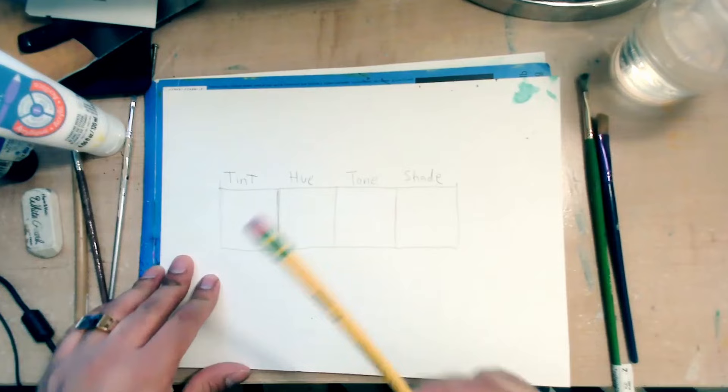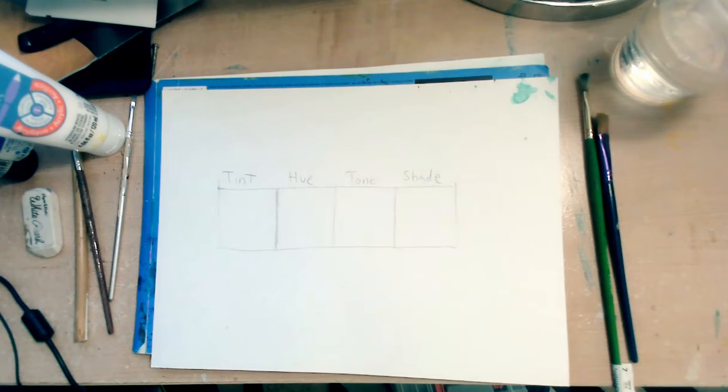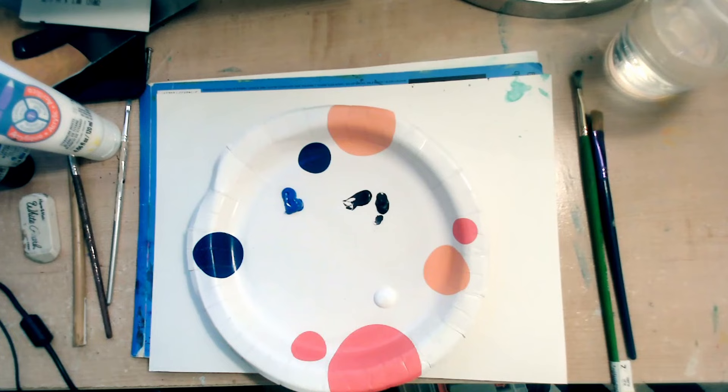What you need to start first is with hue. Hue is going to be your very first one. So for hue, I chose blue. And what I want you to do is I want you to pick one color from the color wheel.